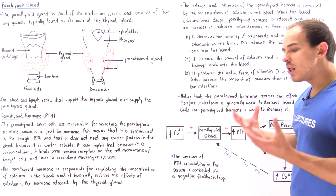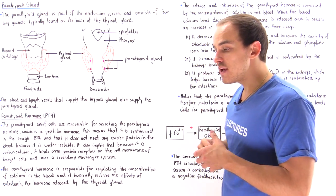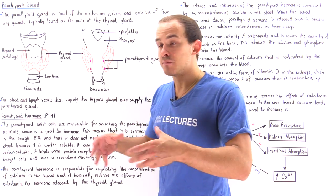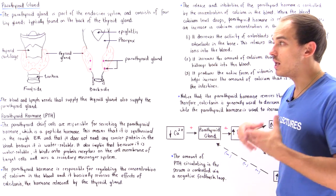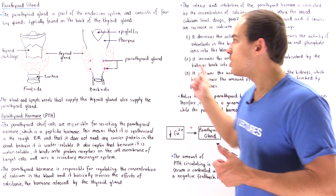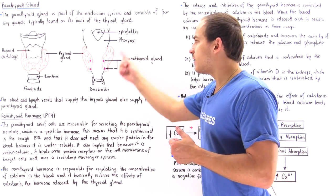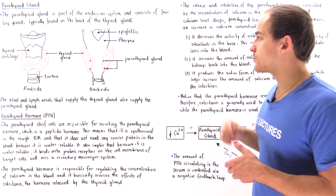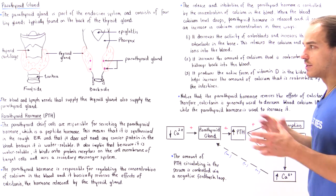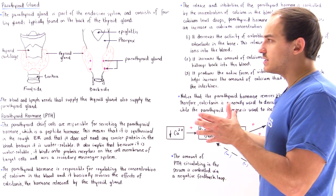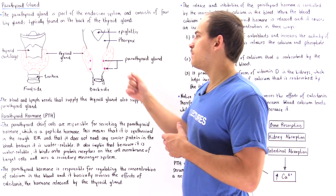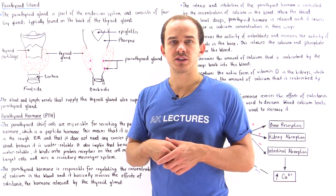The blood vessel system and the lymph vessel system that basically provide the nutrients and the blood to our thyroid gland also provide the blood and nutrients to the parathyroid gland. We see that the thyroid gland is very much connected to the parathyroid gland.